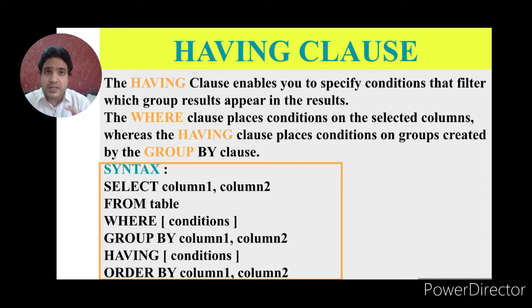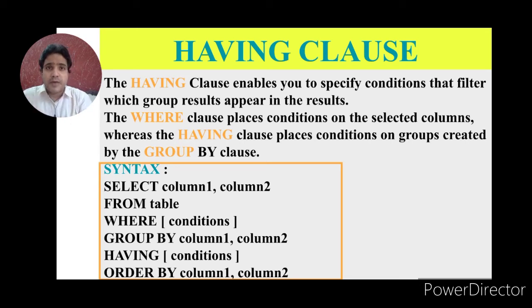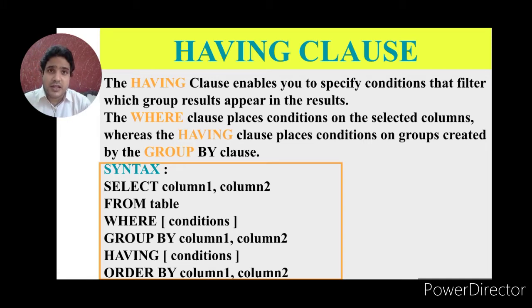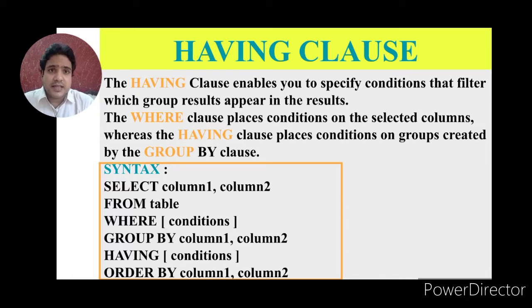A group is formed when multiple tuples have the same values in a column. If multiple tuples have the same values, that creates a group. Data is put into groups by the GROUP BY clause. If any condition applies to a group, we write this condition into a HAVING clause, whereas WHERE clause contains conditions for particular columns having atomic values.